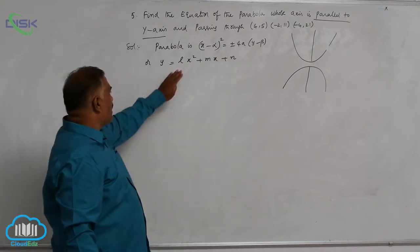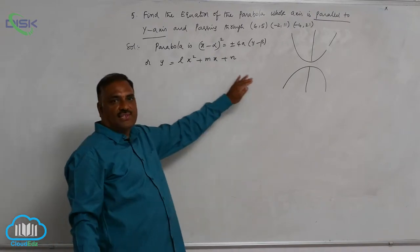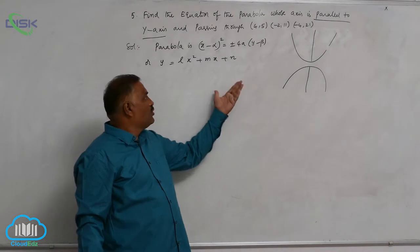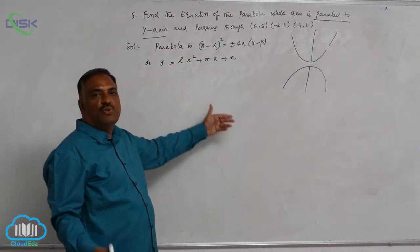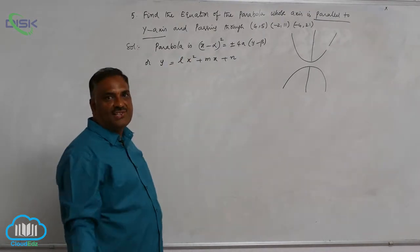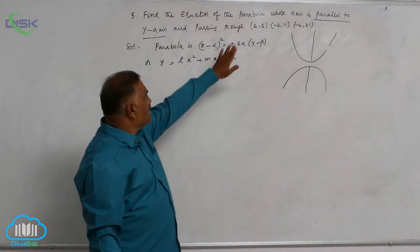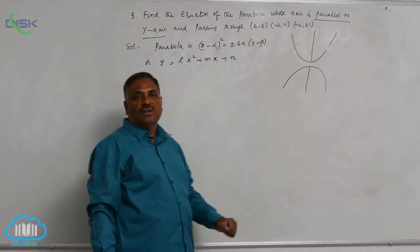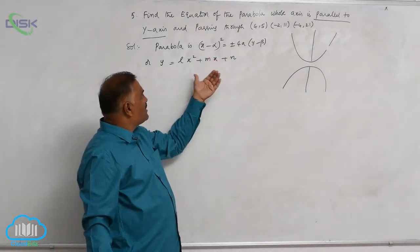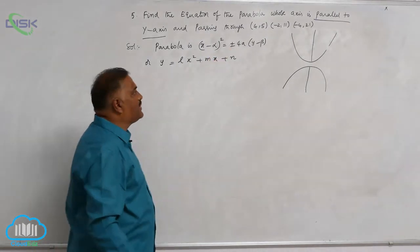Now there are three constants. To find out these three constants, we require three conditions. That is why three points are given to us. Let us claim all these points lie on the curve.